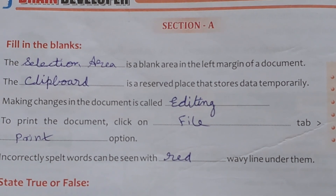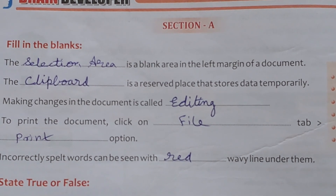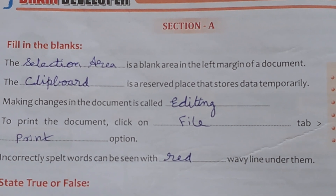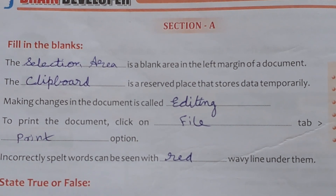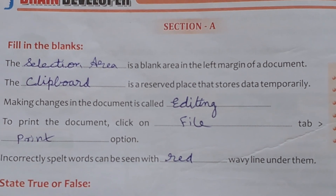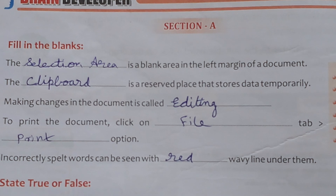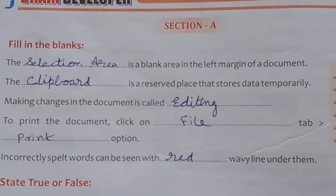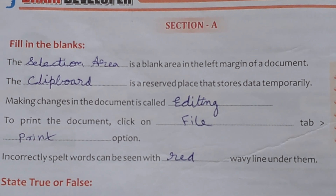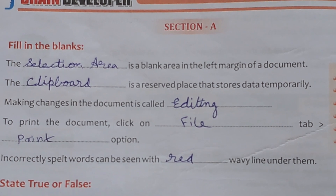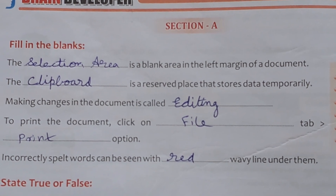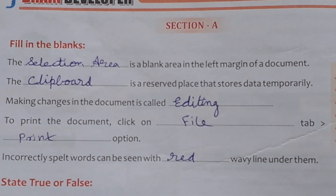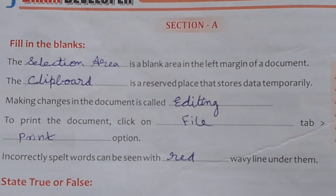Making changes in a document is called blank — answer is Editing. To print the document, click on the blank tab then blank option. You have to write File and then Print option.